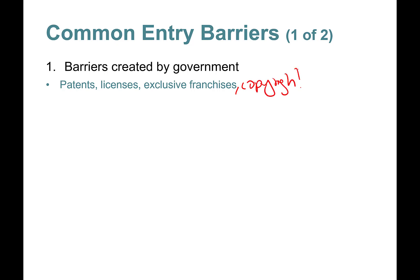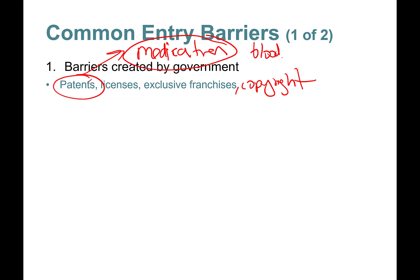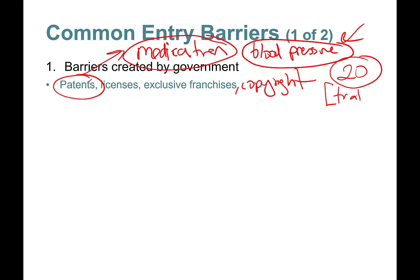Let's talk about patents. Say you have a small pharmaceutical company and you develop a new blood pressure medication that is superior to all others on the market. You apply for a patent. From the date of application, approval covers 20 years — but the first 10 years are consumed by trials and FDA approval, so you effectively have about 10 years to recoup your investment.